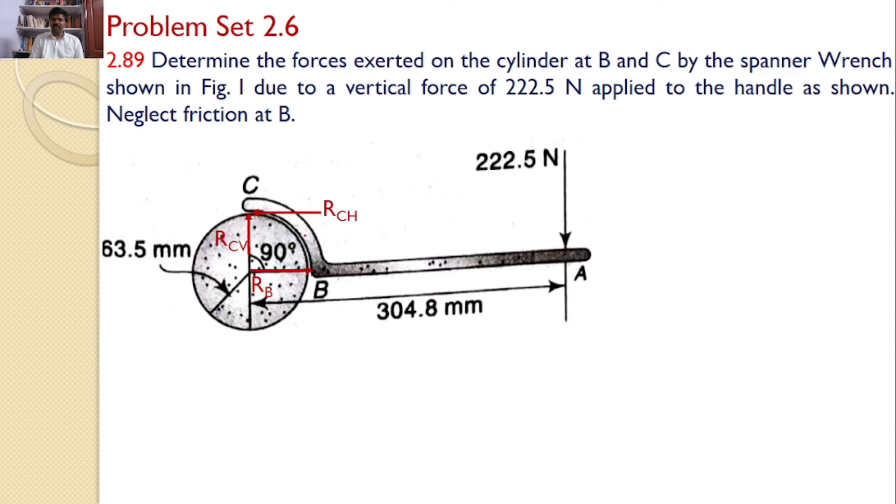Now I can take the moments from any point. I will take the moments about point C. RCH and RCV, both the forces are passing through point C, hence these two forces will not create any moment. Rb will create a moment in the counterclockwise direction, and 222.5 will create a moment in the clockwise direction.